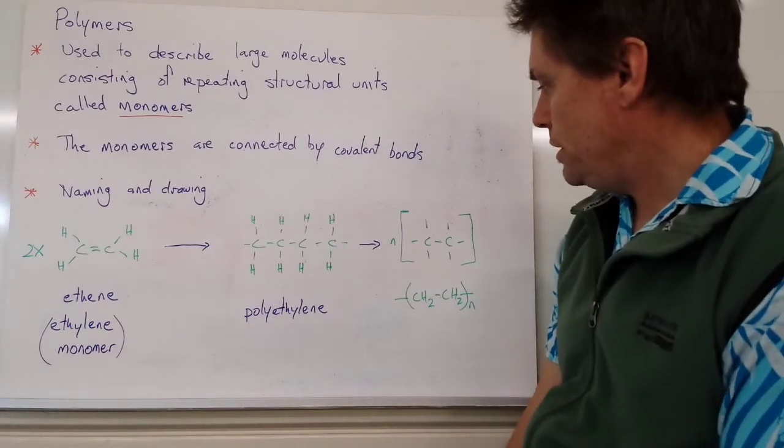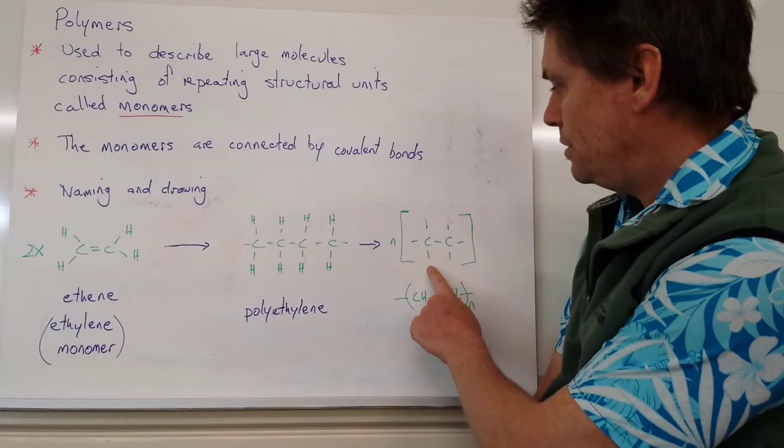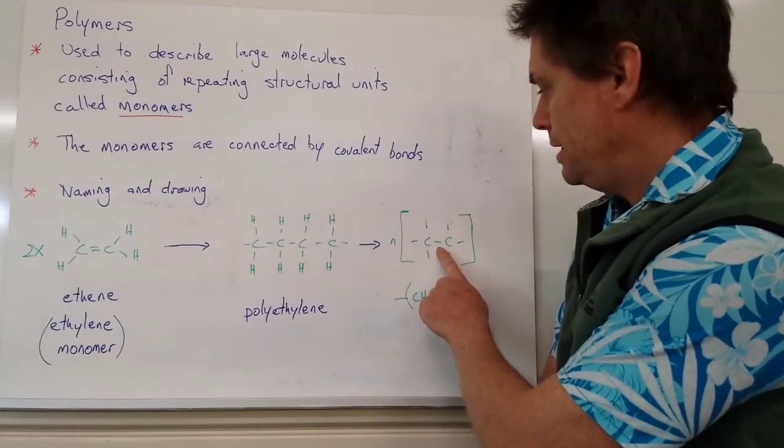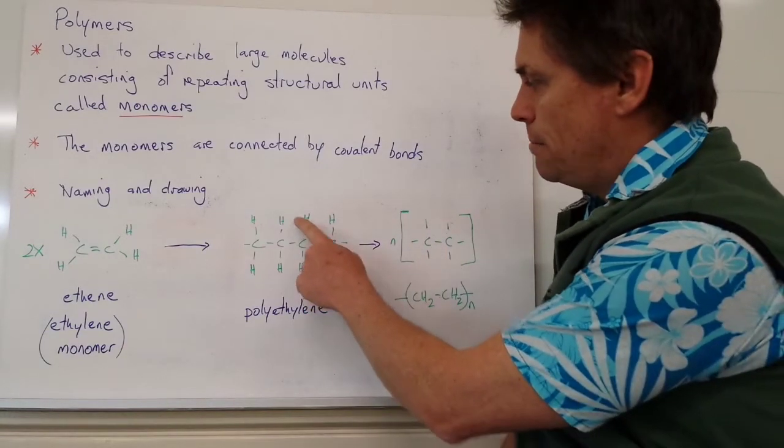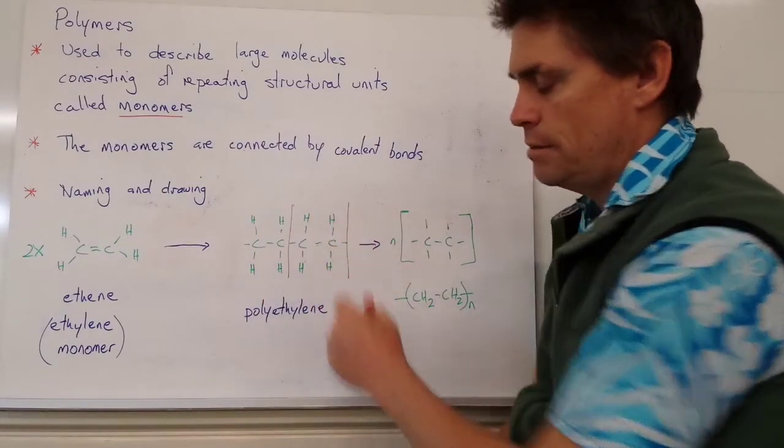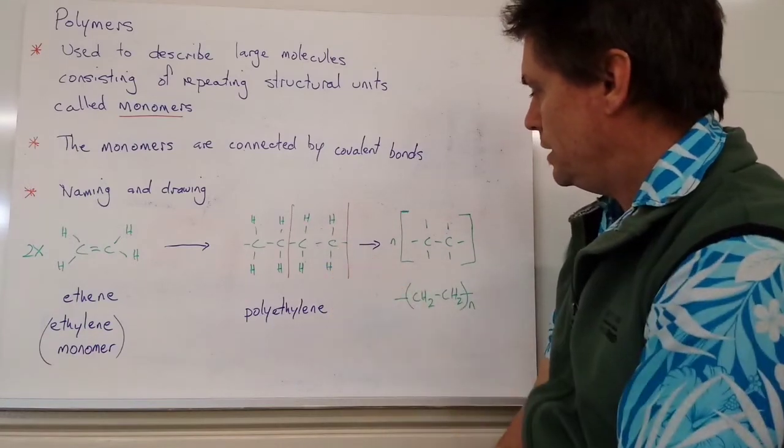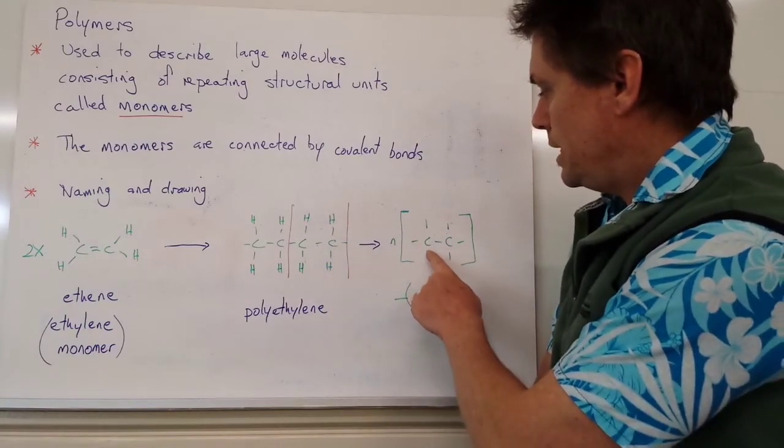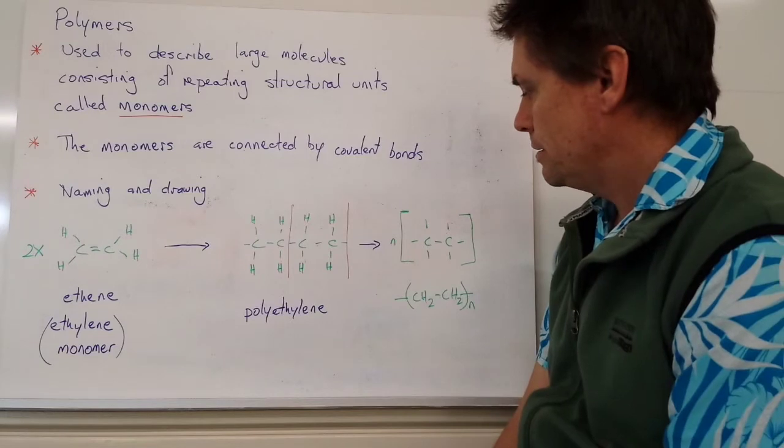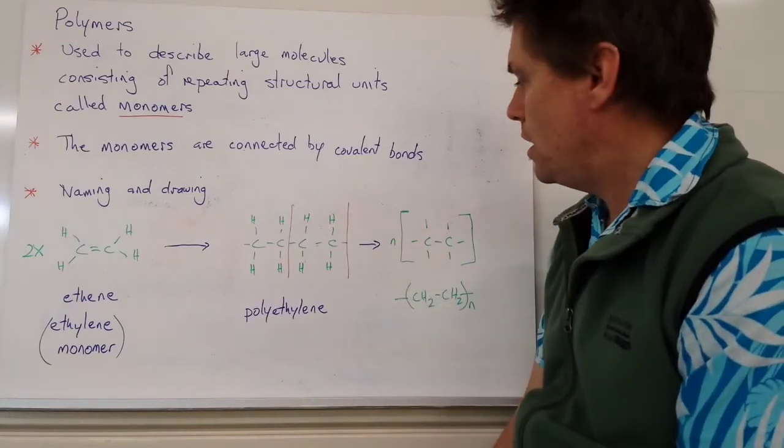The way that we do that is to draw our monomer unit - this is our ethene unit. Notice I don't have a double bond in there because in our molecule here we don't have our double bond. But we do represent this particular unit, so we've got our CH2-CH2 unit. We put an n before it to represent a very high number.